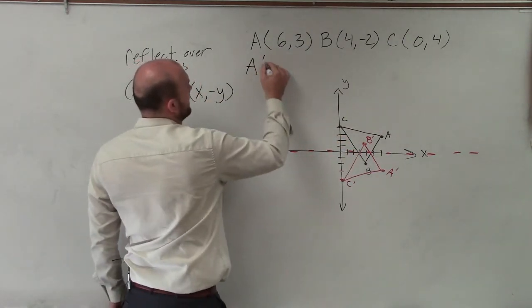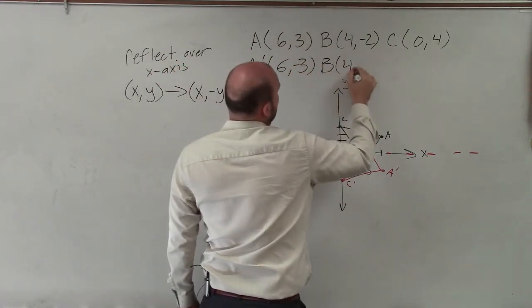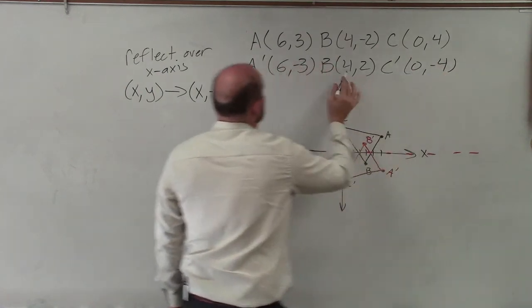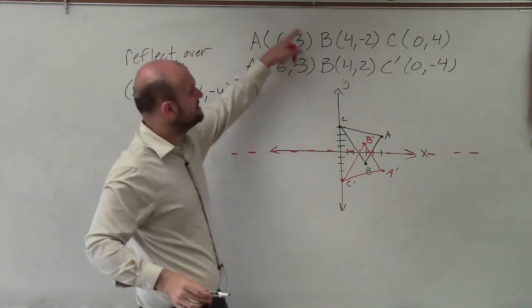So to find my coordinate points, A prime is going to be 6, negative 3. B prime is going to be 4, positive 2. And C prime is going to be 0, negative 4. Notice how the x-coordinates stay the same, but now the y-coordinates are the opposite sign.